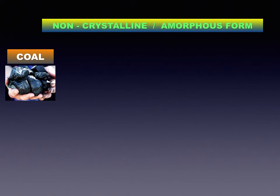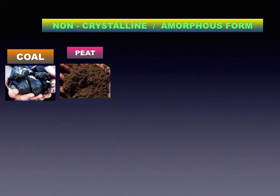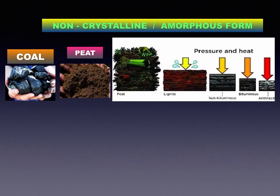The first type is peat. Formation of peat is the first step in the formation of coal. It contains a high proportion of water and less than 60% carbon, so not much heat can be obtained from peat. The second type is lignite. Peat was transformed into lignite due to increased pressure and temperature inside the earth; it contains 60–70% carbon. The third type is bituminous coal, which contains about 70–90% carbon. The fourth type is anthracite, known as the pure form of coal. It is hard and contains about 95% carbon.